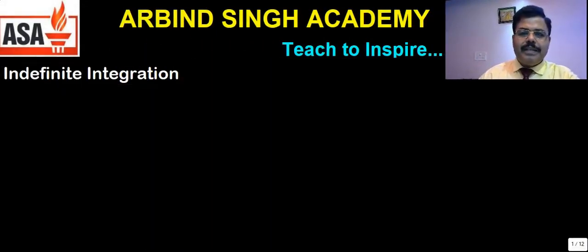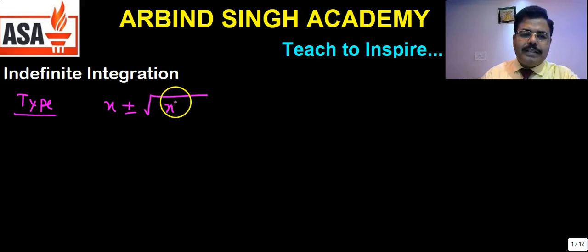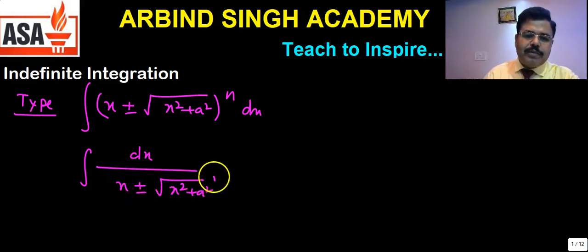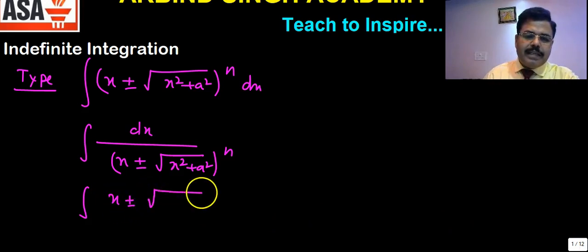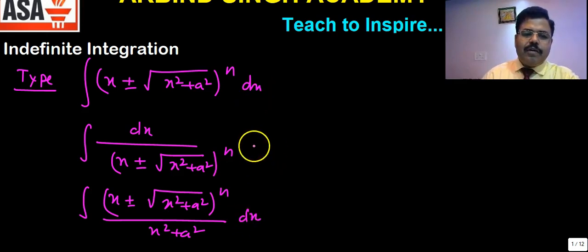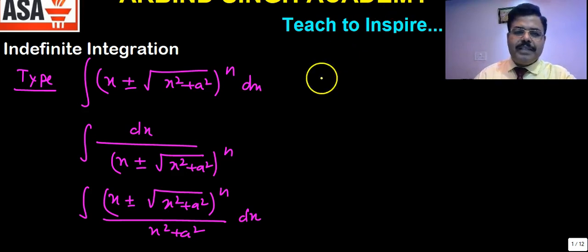In this lecture, we discuss a specific type of question. This type involves expressions like (x ± √(x²+a²))^n, which can appear as: integral of dx, or dx divided by (x ± √(x²+a²))^n, or (x ± √(x²+a²))^n divided by (x²+a²). All these types can be solved using one basic characteristic.